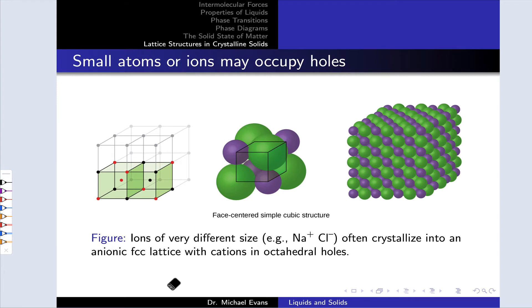As an example of a structure where octahedral holes are filled, in something like Na+Cl-, the Na+ cation is much, much smaller than the Cl- anion. The anions crystallize into a face-centered cubic lattice, and the cations occupy octahedral holes within that lattice.